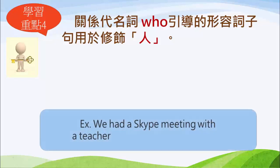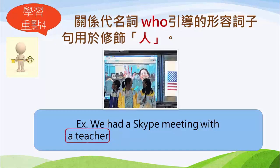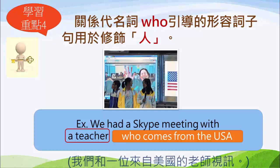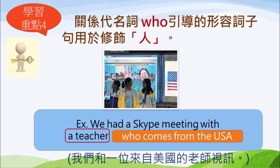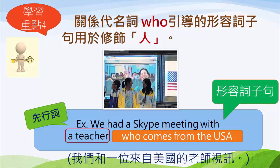我們來看一個例子：We had a Skype meeting with a teacher. 我們跟一個老師視訊喔。哪一個老師？The teacher who comes from the USA——來自美國的一位老師。所以整句翻成「我們和一位來自美國的老師視訊」。A teacher 就是我們說的先行詞，也就是關系代名詞子句修飾的名詞。而 who comes from the USA，就是由關代 who 引導、修飾先行詞的形容詞子句。